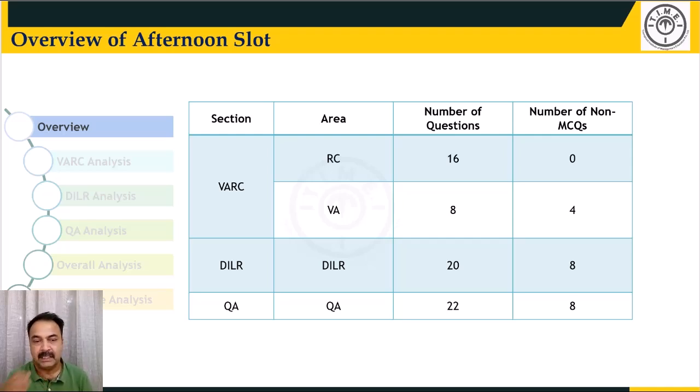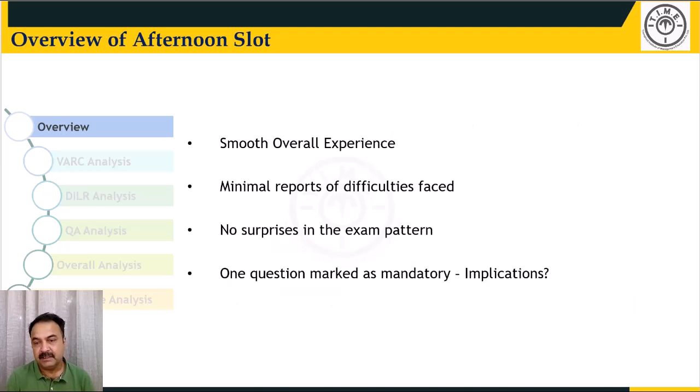You had no non-MCQ questions in RC, 4 questions with marking the odd one out and para jumble sequence as the non-MCQ box type questions. DILR and quant had 8 questions each, decidedly an improvement in this particular count over the earlier years.